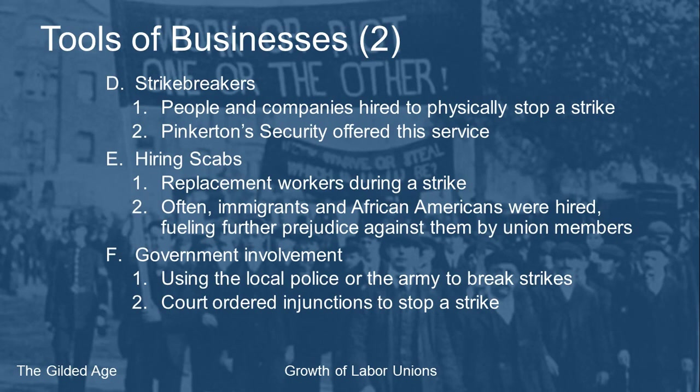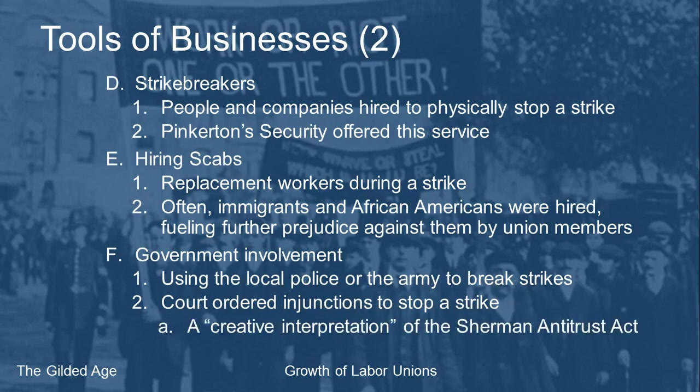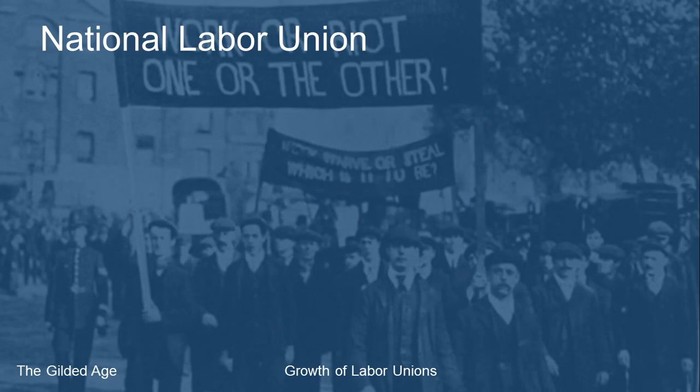Businesses would go to court and get court orders telling strikes to end — one of the first things they did. When the union refused to follow the court order, police could go in because the strikers were violating it. One creative way businesses did this was through a creative interpretation of the Sherman Antitrust Act, which banned all combinations in restraint of trade. Businesses argued that's exactly what unions were — workers combining in strikes to stop trade.